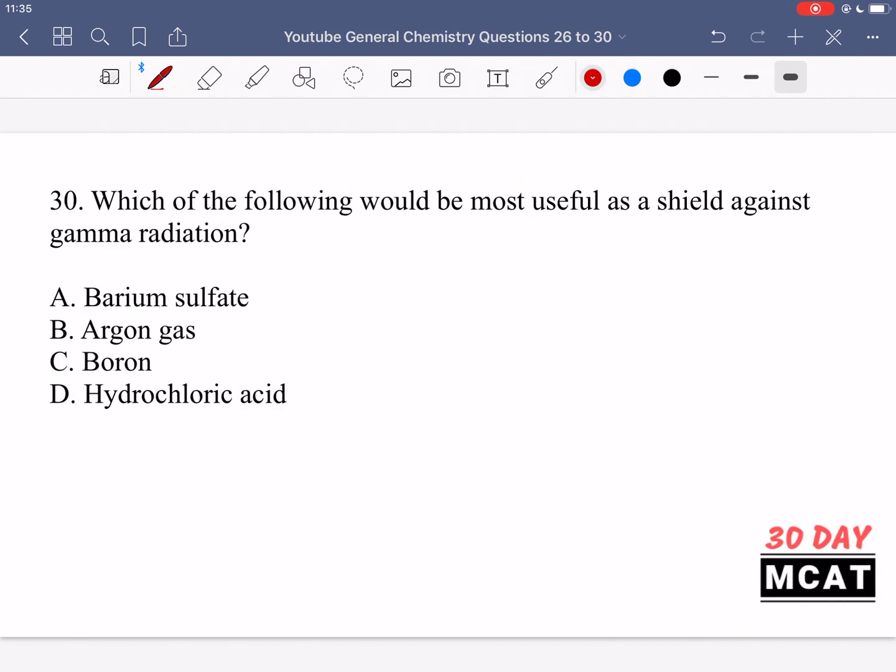In question 30 we're asked which of the following would be the most useful as a shield against gamma radiation. So we want a shield against gamma radiation, which are photons being propelled. So if we want to protect against a type of radiation,